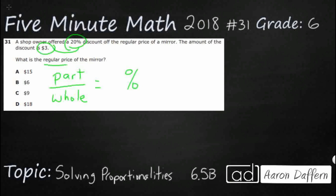So let's fill in what we have here. We know that it is a 20% discount, and the discount is $3. So that means we are going to have a $3 discount — that is the part that is off. What we do not have is the total, so I am just going to put a box there. That is our missing amount.